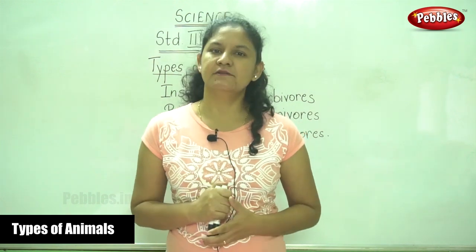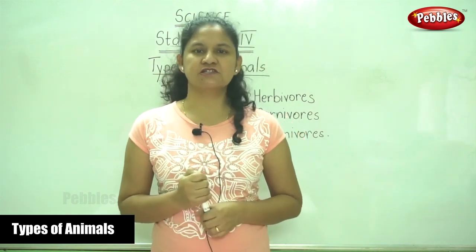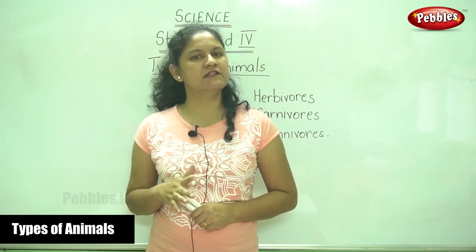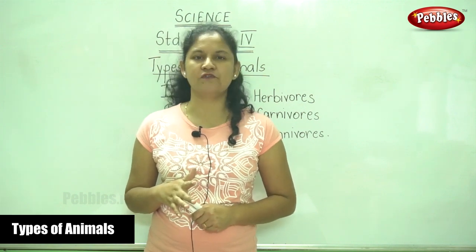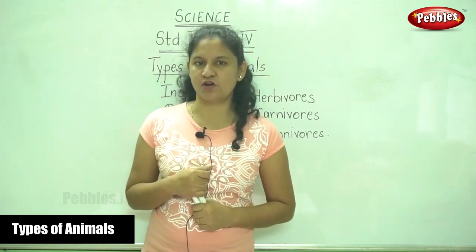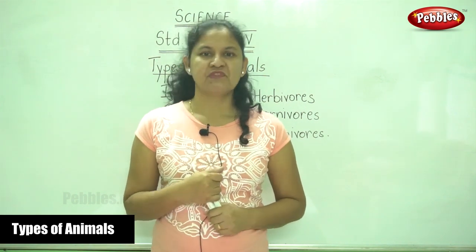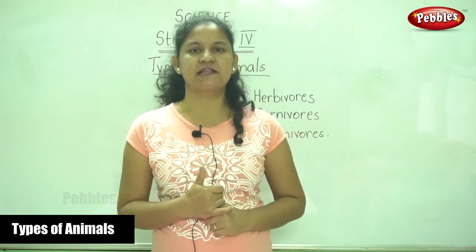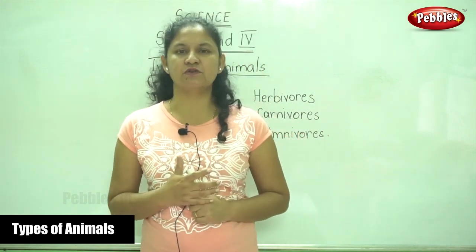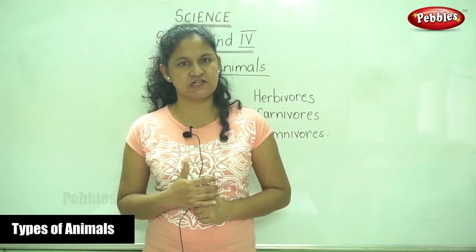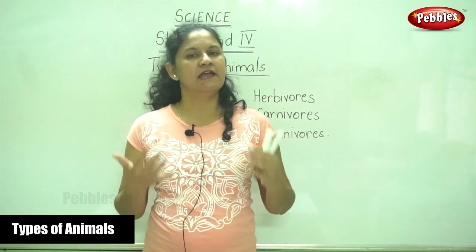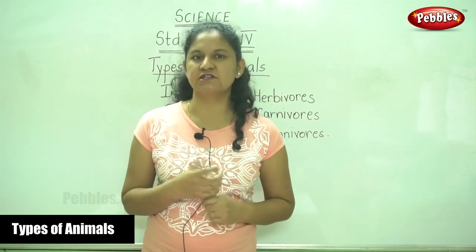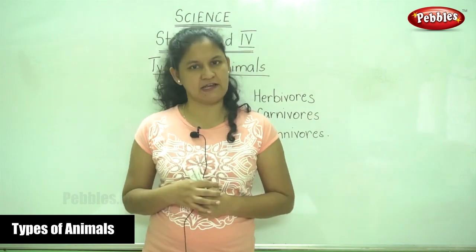Leaves are called the food factory because they manufacture or prepare food for the plant in the presence of sunlight and carbon dioxide. Plants take in carbon dioxide and breathe out oxygen, and this oxygen is used by humans and animals to breathe in.